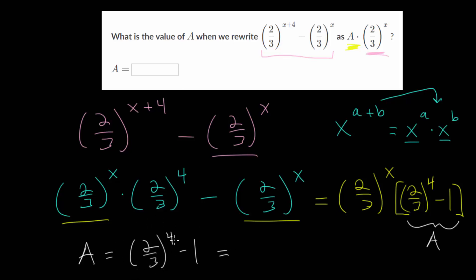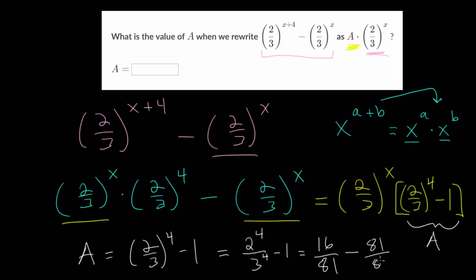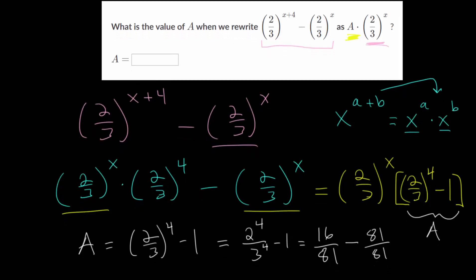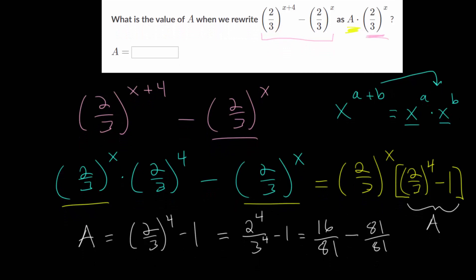We can actually raise this to the 4th power. Remember, when raising a fraction to an exponent, both the numerator and the denominator are raised to that exponent. So, that's really just 2 to the 4th over 3 to the 4th minus 1. Now, 2 to the 4th is 16, and 3 to the 4th is 81. If we want to combine these two terms with subtraction, we'll give this a common denominator of 81, so 1 is really just 81 over 81. Carrying out our subtraction: 81 minus 16 is 65, so we get minus 65 over 81.